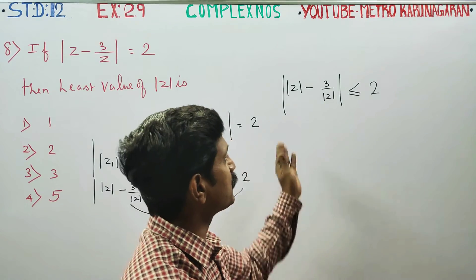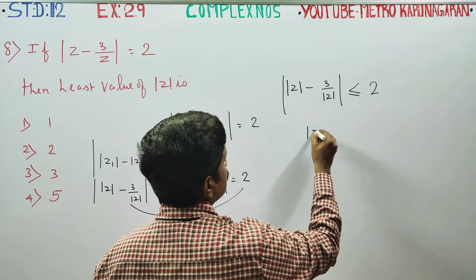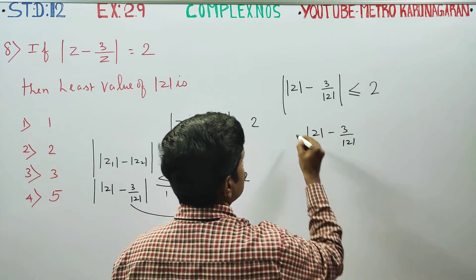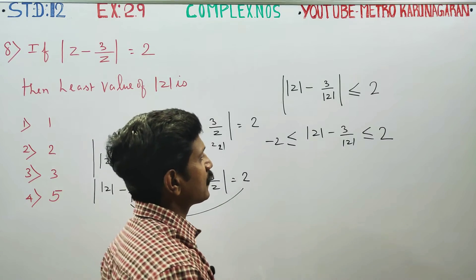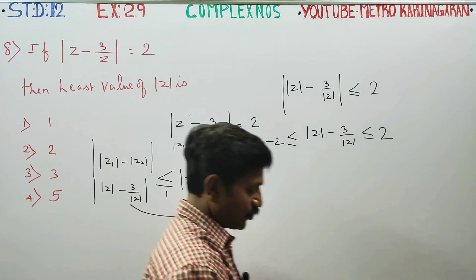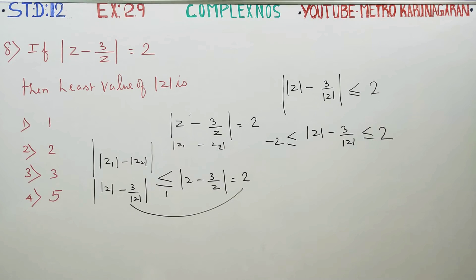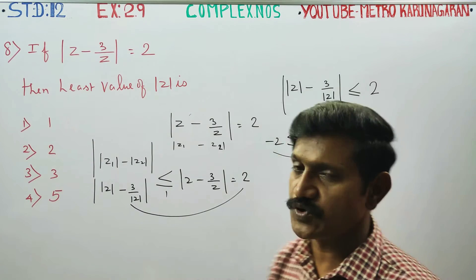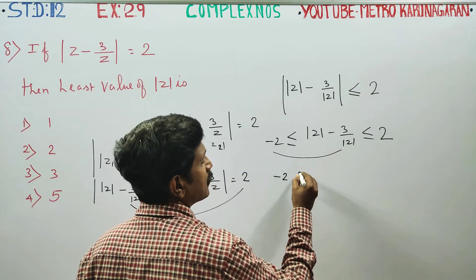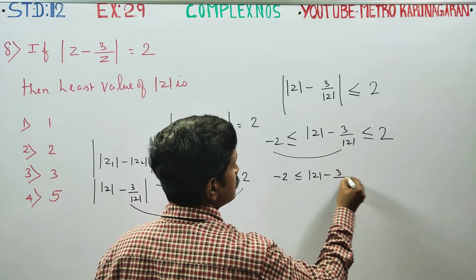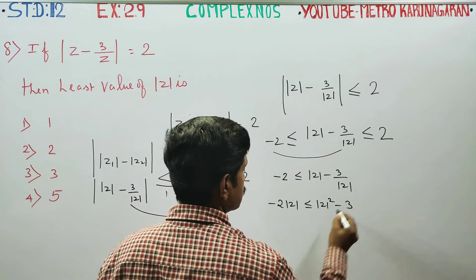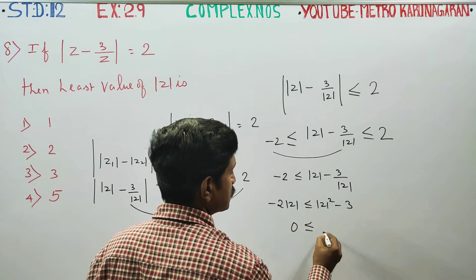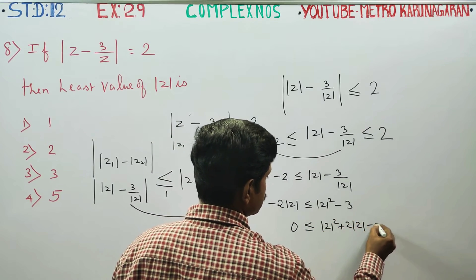The modulus of Z minus 4 minus 1 equals 2. Then, Z minus 3 by Z equals Z minus 2. So Z minus 3 by Z minus 2 by Z, minus 3 by Z minus 2 equals Z minus 2. For the least value, we start: minus 2 is less than or equal to modulus of Z minus 3 by Z. For all Z, modulus of Z is less than or equal to Z squared minus 3. The product sum is less than or equal to modulus of Z squared plus 2 modulus of Z minus 3.